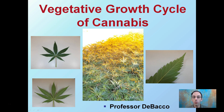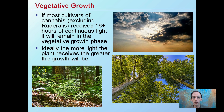Here we're looking at the vegetative growth cycle of cannabis. The vegetative state focuses mainly on the leaves and not on producing flowers, but on producing a plant with good structure that can carry itself well into the flowering stage, which follows the vegetative state.